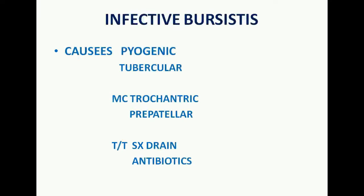In infective bursitis, the causes are pyogenic or tubercular. They most commonly involve the trochanteric or pre-patellar bursa. The treatment is surgical drainage and antibiotics. Now we will see the specific types of bursitis and their names.